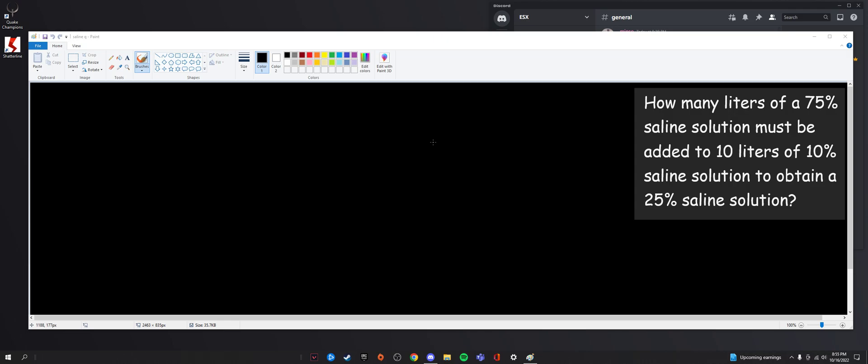There's a lot of them, they all just use different numbers, and my throat is sore so let's make this a little fast. How many liters of a 75% saline solution must be added to 10 liters of a 10% saline solution to obtain a 25% saline solution? What are we actually doing here?